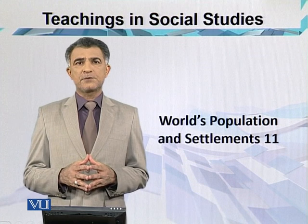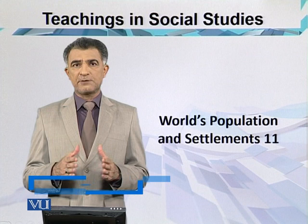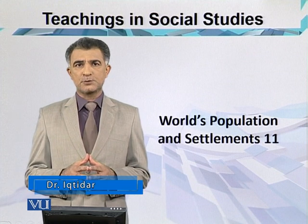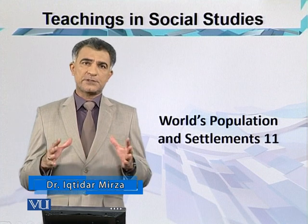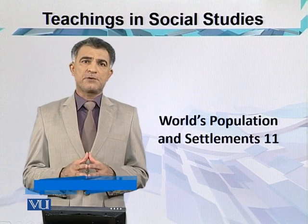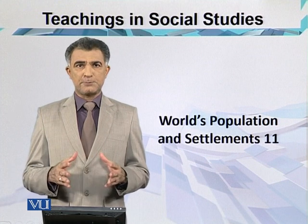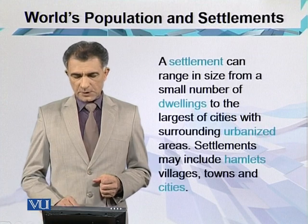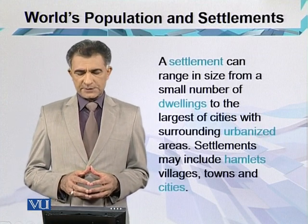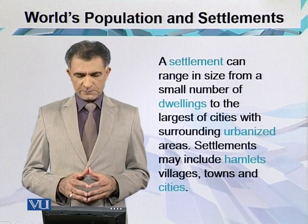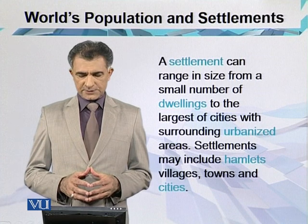In the physical factor, we can see that the rainy climate produces settlements totally different as compared to areas under drought conditions. This is the physical environment controlling human settlements. A settlement can range in size from a small number of dwellings to the largest of cities with surrounding urbanized areas.